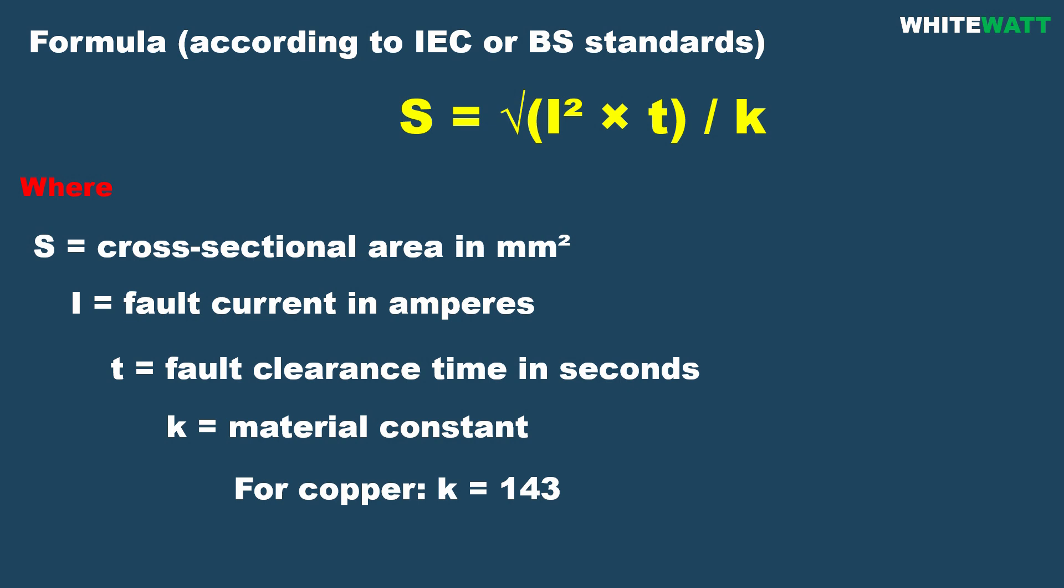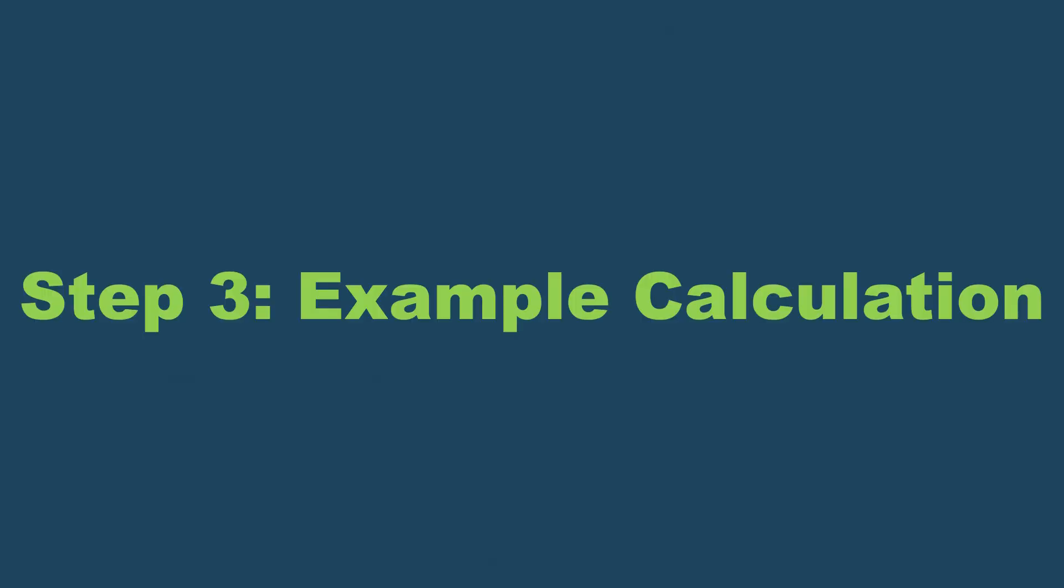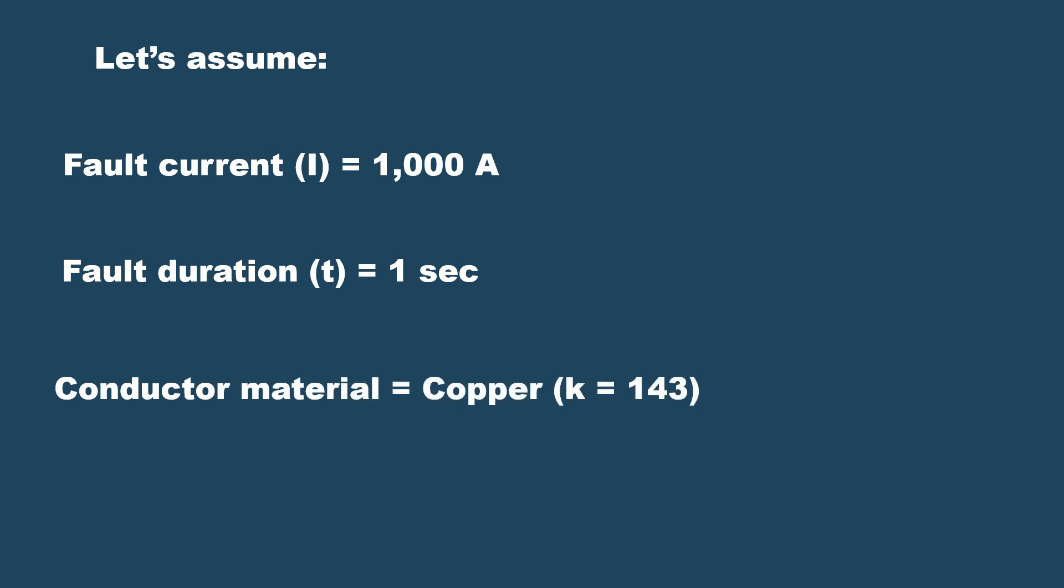Step 3: Example calculation. Let's assume fault current is 1000 amperes, fault duration time is one second, and conductor material is copper. So apply formula.